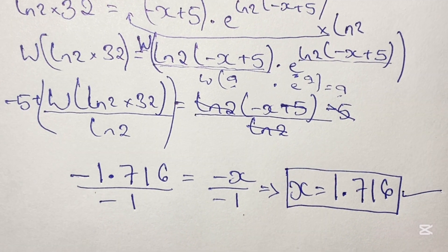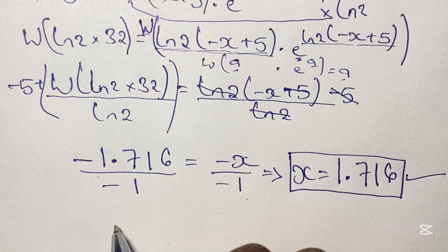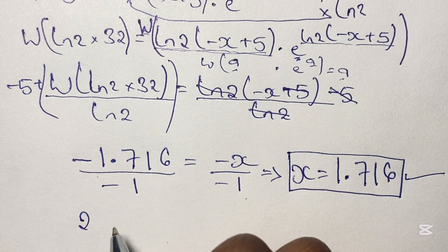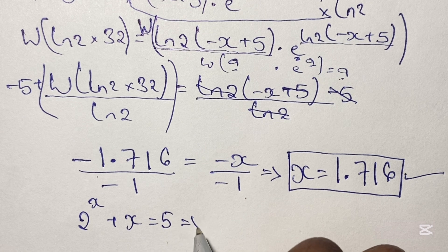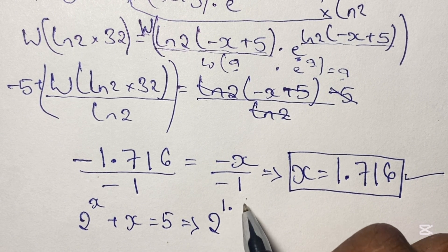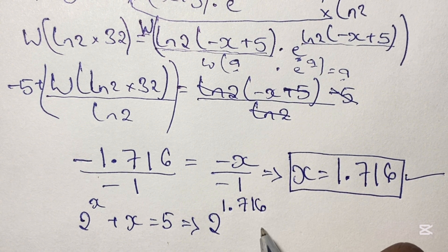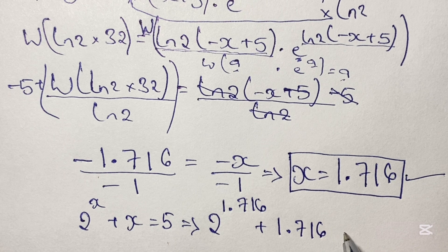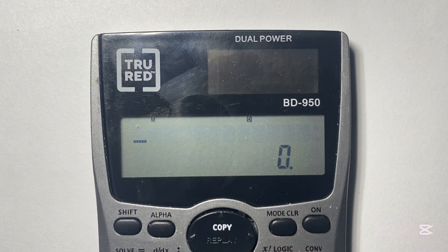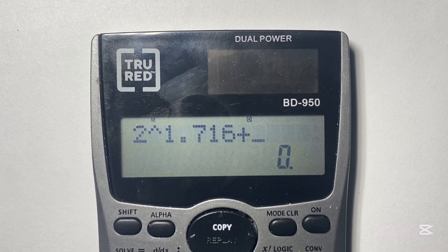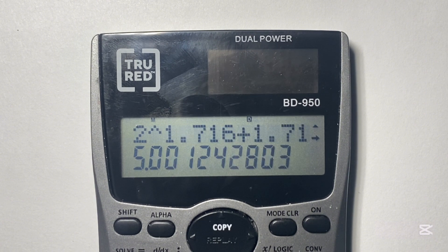Now we can verify this solution. Our original equation states that 2 to the power of x plus x is equal to 5. We estimated x would be 1 point something, and our answer is also 1 point something. Substituting x equals 1.716, we have 2 to the power of 1.716 plus 1.716, and using a scientific calculator we can confirm this equals 5. So x is indeed approximately equal to 1.716.